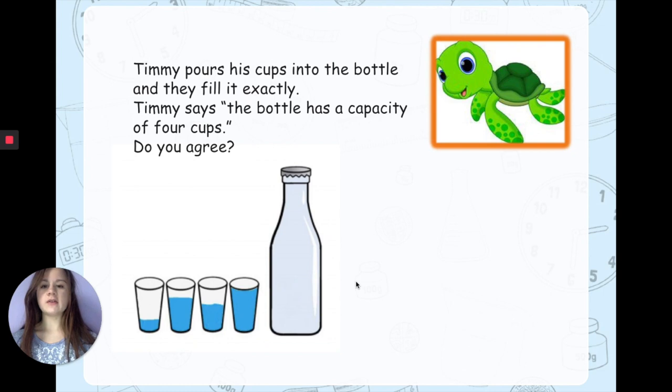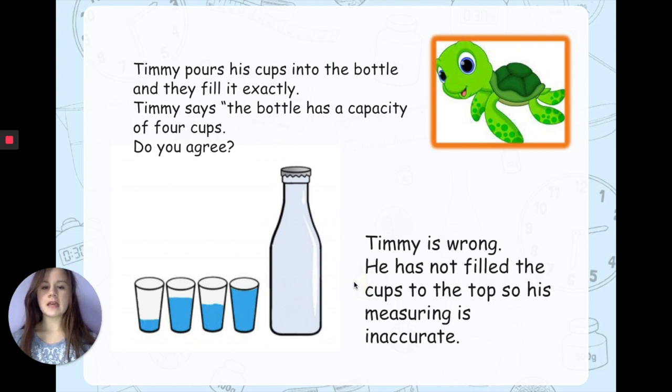The answer is Timmy is wrong. He has not filled the cups to the top, so his measuring is inaccurate. So we can see here is his only full cup. If Timmy had four cups that looked like this that were full and put those into the bottle and that was full, then it would have a capacity of four cups. But we can see that these cups are not completely full. So Timmy is wrong.